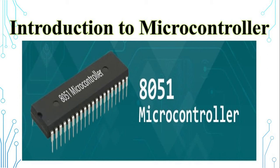A microcontroller is a computer on a chip — that is, microprocessor, ROM, RAM, parallel IO, serial IO, and timers are integrated on a single chip. That is called a microcontroller. According to the size of the data word, microcontrollers are categorized as 4-bit, 8-bit, 16-bit, and 32-bit microcontrollers. Examples of 4-bit microcontrollers are Texas Instruments TMS 1000 and Hitachi HMCS40. Examples of 8-bit microcontrollers include Motorola 6801.